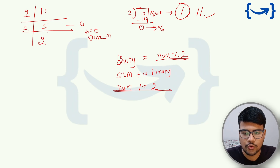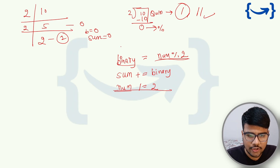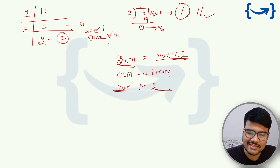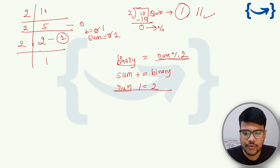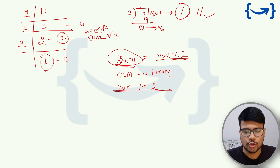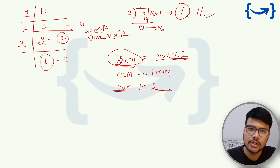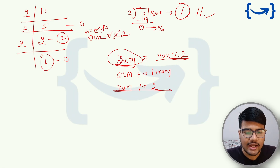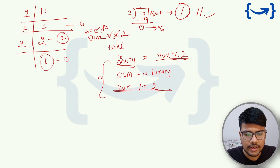In the second operation, 2×2=4 and 5−4=1, so binary bit is 1 and sum becomes 1. Next, 2×1=2 gives remainder 0, so sum remains 1. The final remaining digit is 1, so sum becomes 2. We continue these operations until num becomes 0 — the condition is num > 0 — and at the end we return sum.